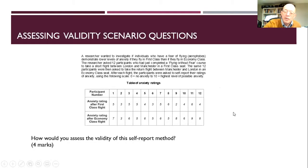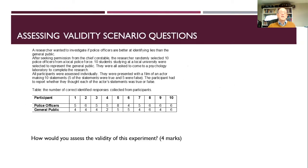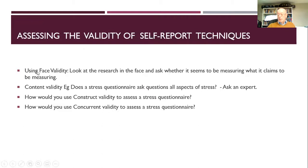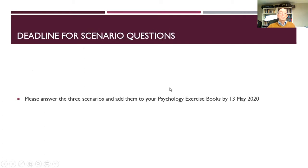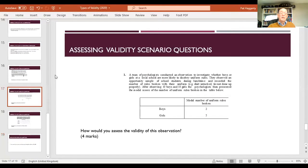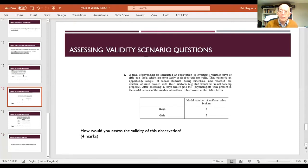These three scenarios — assessing validity of an experiment, an observation, and a self-report — are exactly the kind of things you might get in a Component 2 exam. They'll describe a scenario and ask how you would assess the validity of that research. Please have all of those tasks done by Wednesday the 13th of May. Thanks for dropping in — it's lovely to see you. I've got one more piece of work to set, which I'll put up on Wednesday morning. Enjoy this one and I'll speak to you soon.